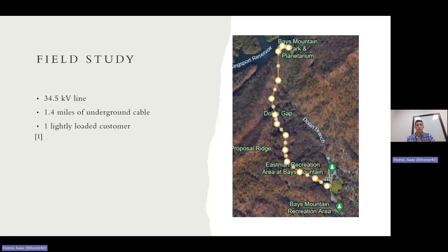So here's a field study that happened in the Kingsport, Tennessee area. You can see this line is 34.5 kV, so it's above that 25 kV threshold where ferroresonance can start happening. 1.4 miles of underground cable, so a lot of capacitance on this line. And it's only one lightly loaded customer on the top of mountain.